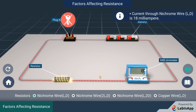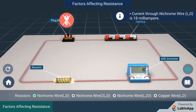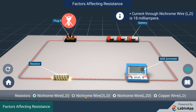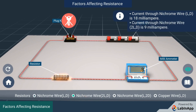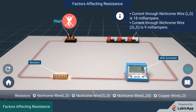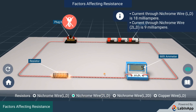With this as the reference, double the length of the resistor coil and observe the amount of current flow. We see that 9 mA current is flowing through the resistor, which implies that with the increase in length there is a decrease in current flow. This means that as the length of the resistor increases, the resistance also increases.